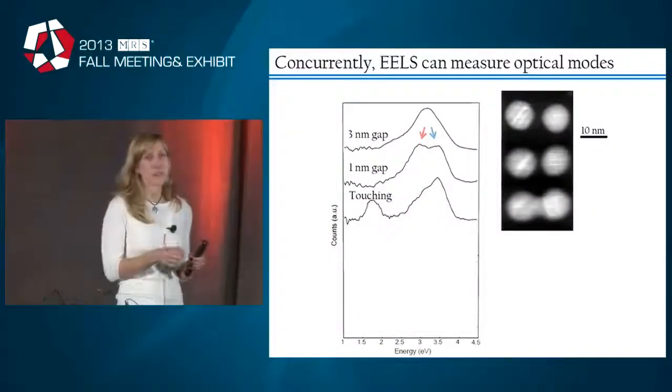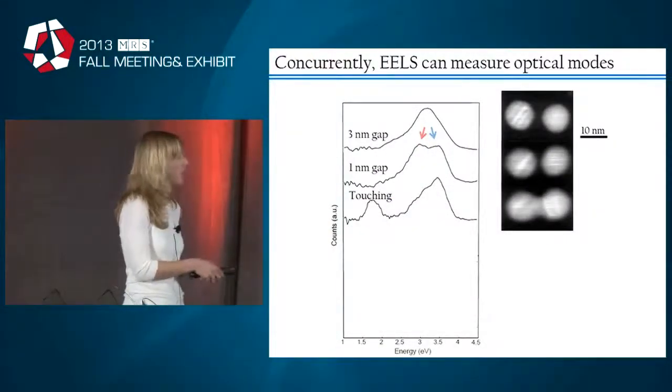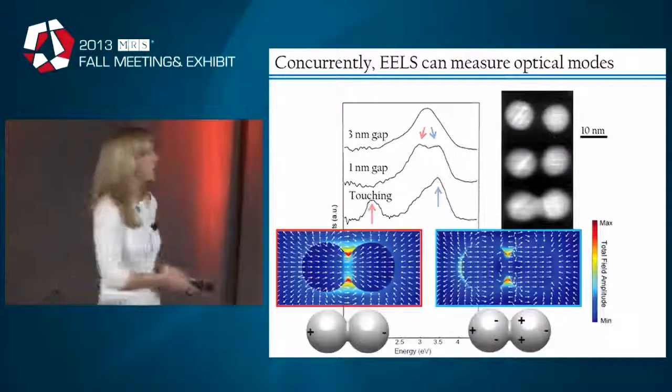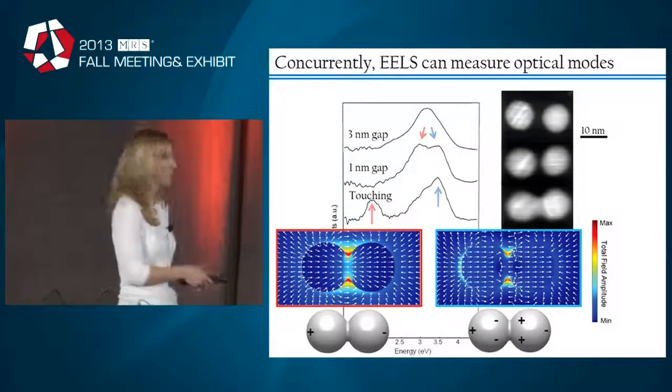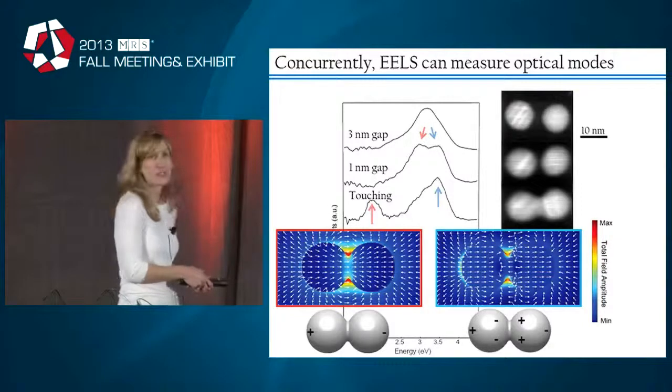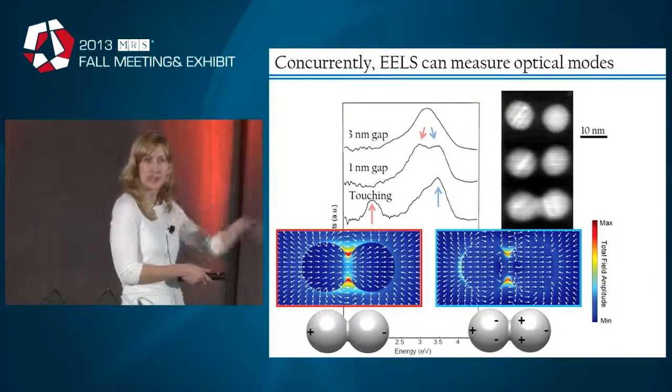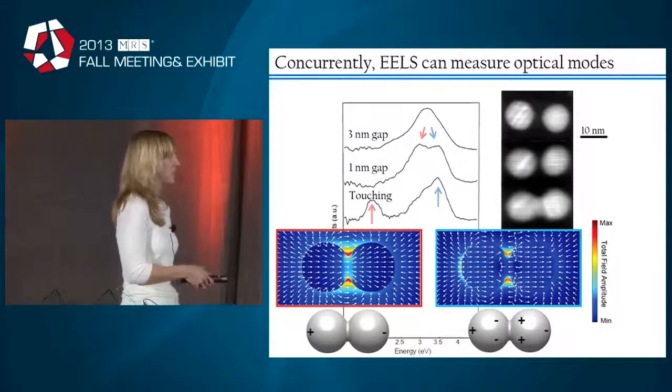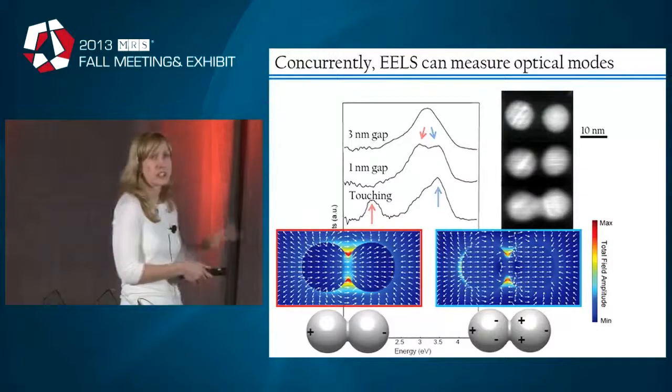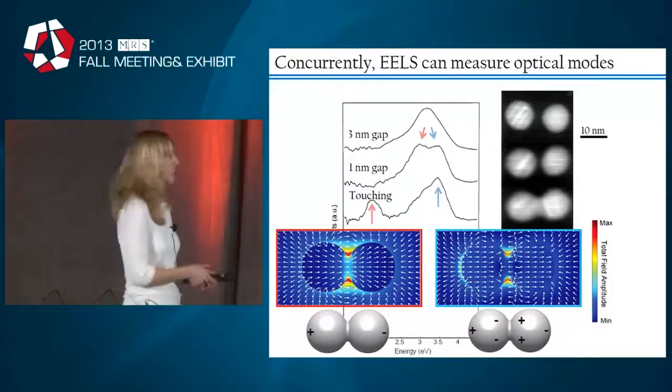Now when the particles are touching, you wind up with a very low energy mode. This corresponds to basically a charge transfer mode where charges can couple across the two particles and slosh back and forth between the two, forming something that looks like kind of a larger dipole or almost an elliptical nano antenna.